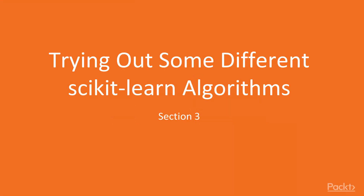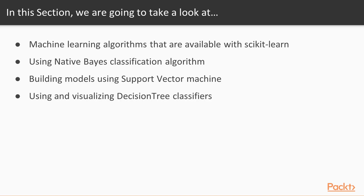Welcome to Section 3: Trying Out Some Different scikit-learn Algorithms. In this section we'll explore a few of the machine learning algorithms available with scikit-learn. We'll learn about the Naïve Bayes classification algorithm and how to use scikit-learn's Naïve Bayes classifier, learn about Support Vector Machines and how to build machine learning models using SVM, and we'll explore how to use and visualize decision tree classifiers.